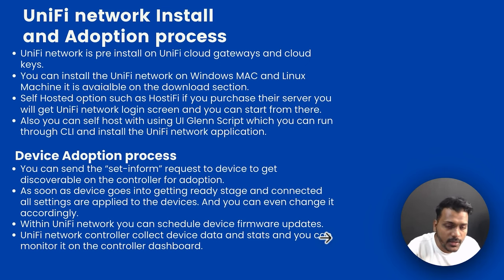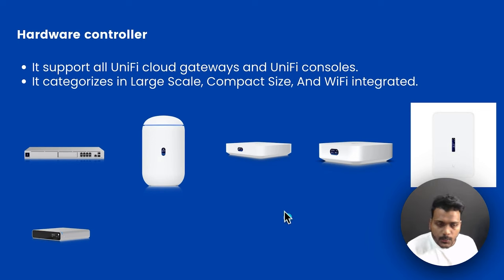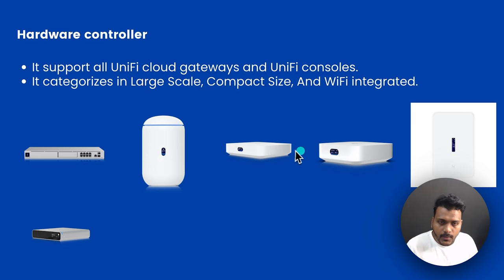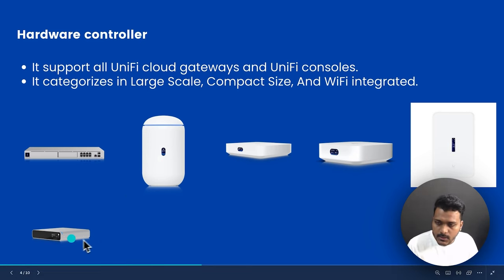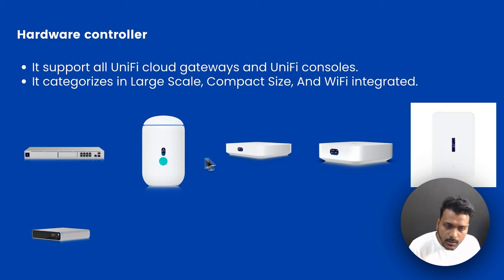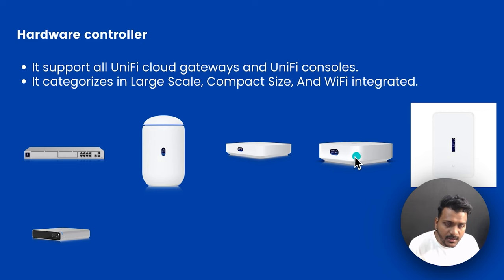Once adopted, all settings are saved and you can change them accordingly within UniFi Network. You can schedule device firmware updates, the controller collects device data and stats, and you can monitor everything on the controller dashboard. The hardware controller lineup includes UDM Pro, UDR, Cloud Gateway Ultra, UniFi Express, Dream Wall, and Cloud Key Gen 2 Plus — all with UniFi Network applications built in. The UniFi Express and Dream Wall also have integrated Wi-Fi in the gateway.